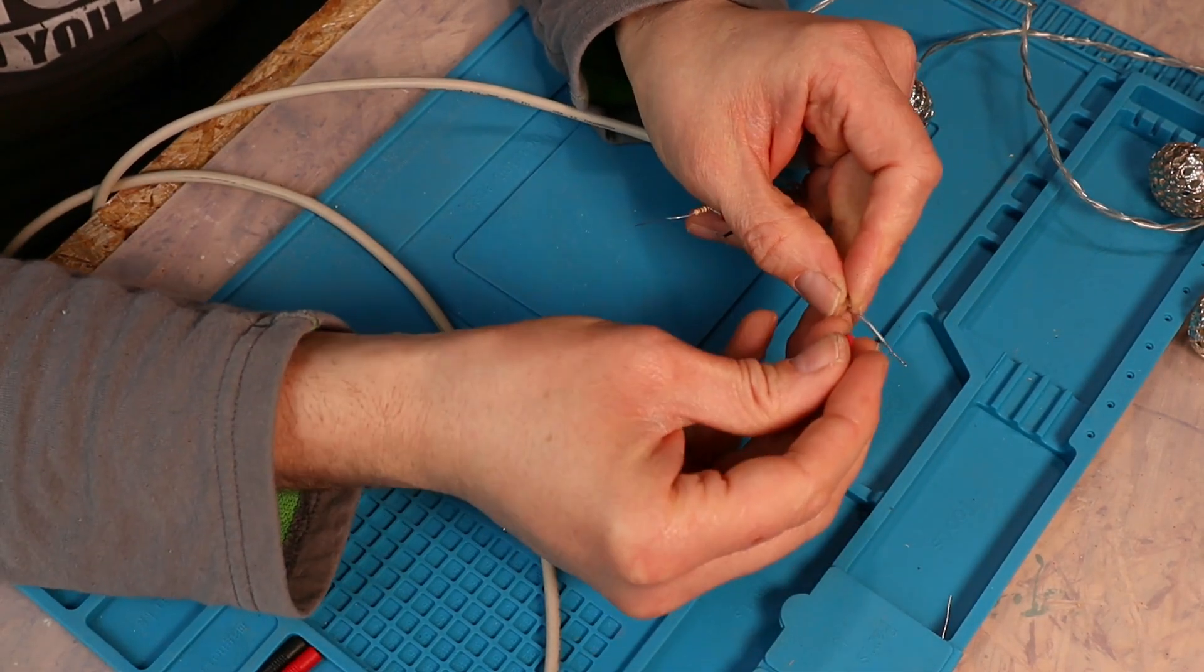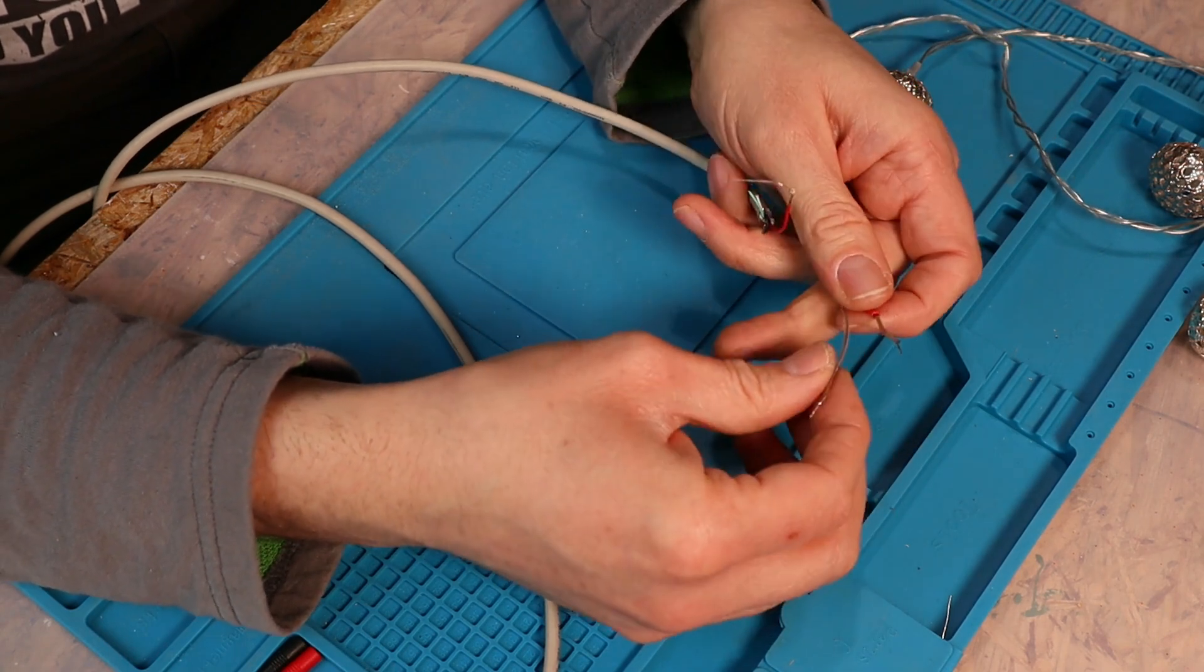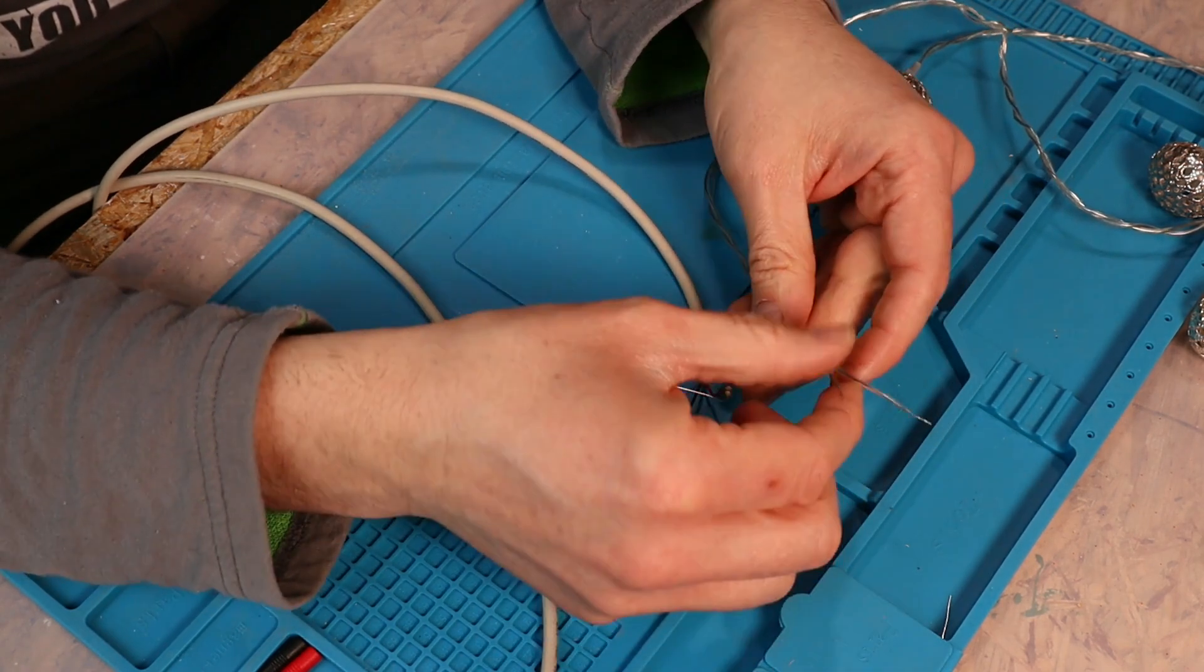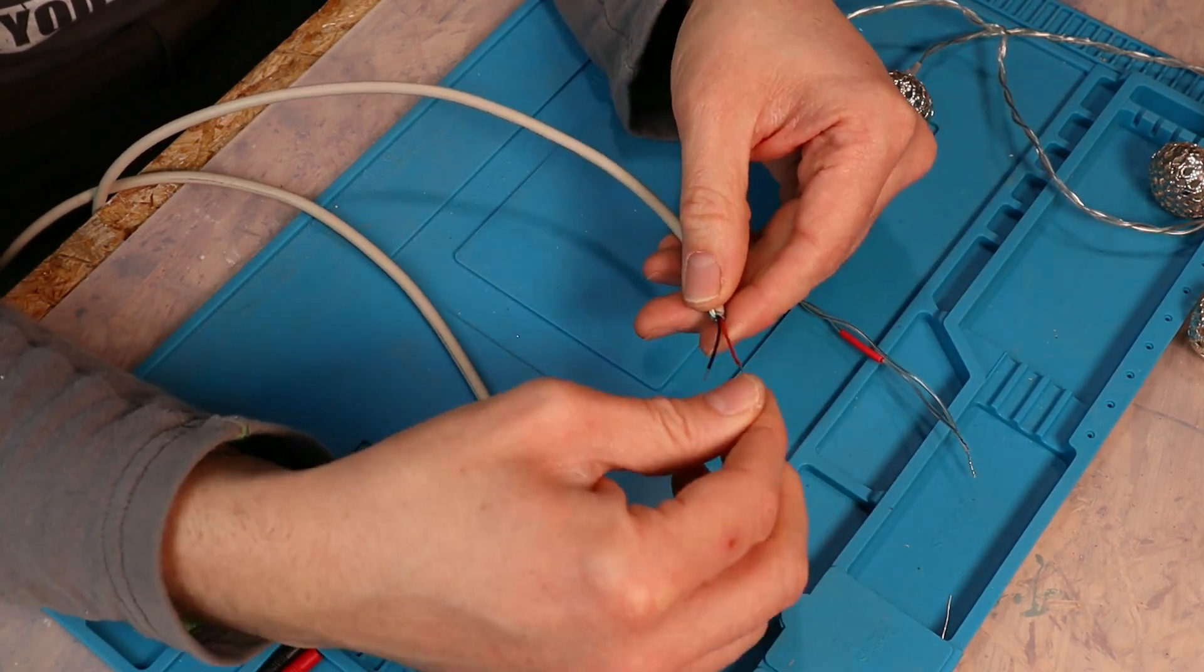To mark that positive wire, I just add a piece of shrink tube to it, a red one, so that I can clearly identify the positive wire.